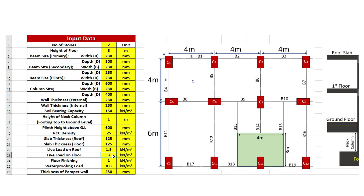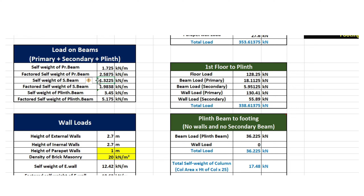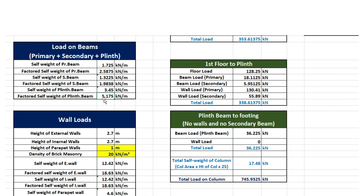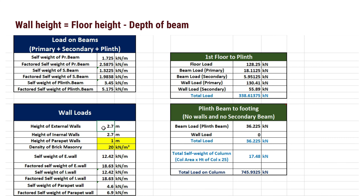Moving to the next step, we need to calculate the load on beams, which includes primary beams, secondary beams, and plinth beams. Self weight of primary beams is equal to area of cross section — 230 mm x 300 mm — multiplied by density of RCC. Factored self weight is 1.5 times this value. Self weight of secondary beams is area of cross section — 230 mm x 230 mm — multiplied by density of RCC (25 kN per meter cube), and factored self weight is 1.5 times that. Self weight of plinth beam is area of cross section — 230 mm x 600 mm — multiplied by density of RCC, and factored self weight is 1.5 times this.